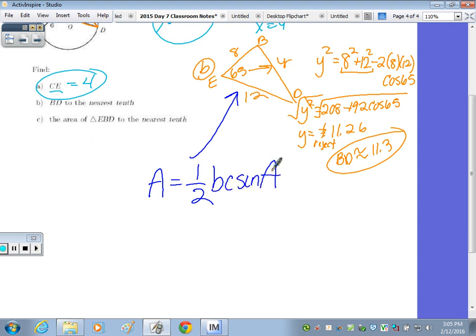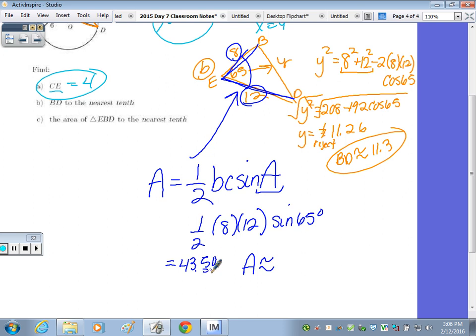It's BC sine A. Now, A is the side included, or the angle included between the two sides. So in this case, it's going to be 1 half. The angle's here, and the two sides that include that angle are 8 and 12. So it's 1 half of 8, which is 4, times 12, sine of 65 degrees. So we type that in in our calculator. So 43.50, rounding to the nearest tenth, the area's going to be approximately 43.5 units squared.